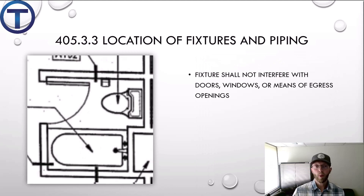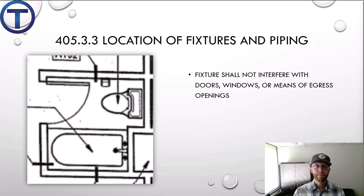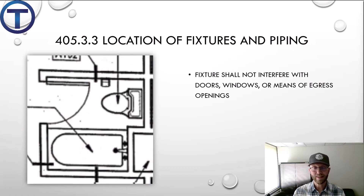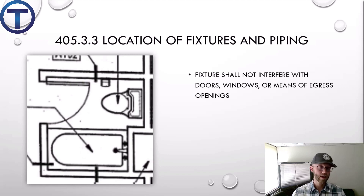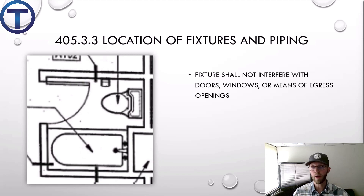405.3.3 talks about the location of fixtures and piping. It states fixtures shall not interfere with doors, windows, or means of egress — that means ways you can get out of the room. You'd want to make sure that when you install the toilet, it's not going to block the door. Same thing with the sink — if there's a vanity, you can't put it right behind the door so it won't open all the way.